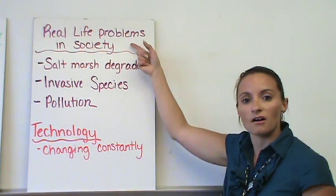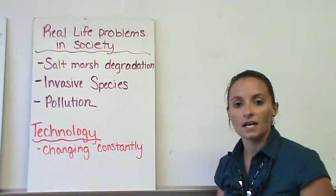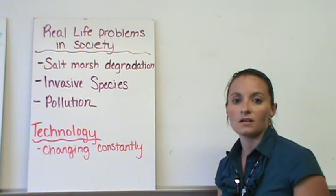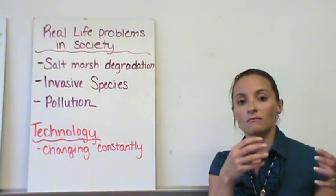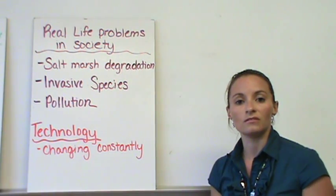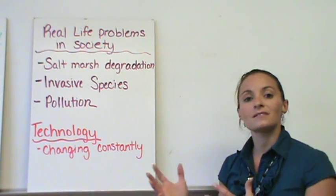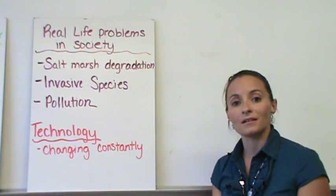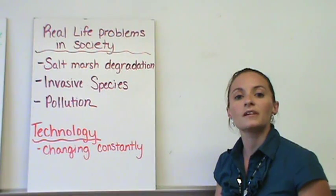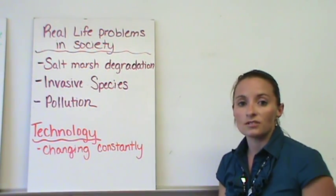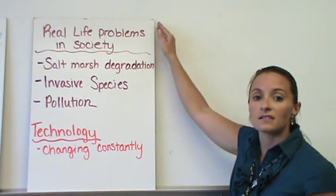And some of these issues of society actually lead into our technology piece. The technology in science is constantly changing. And because of this technology, we're able to discover new things within our natural world. We're able to come up with new evidence for things. Things that we thought were true a couple hundred years ago, the earth was the center of the universe. We now have other evidence through more technology that the earth is not the center of our universe. The sun is the center of our solar system. So the technology is constantly changing. Since the mid-1800s, we have been able to see cells a lot closer. So technology has helped us advance in science tremendously.